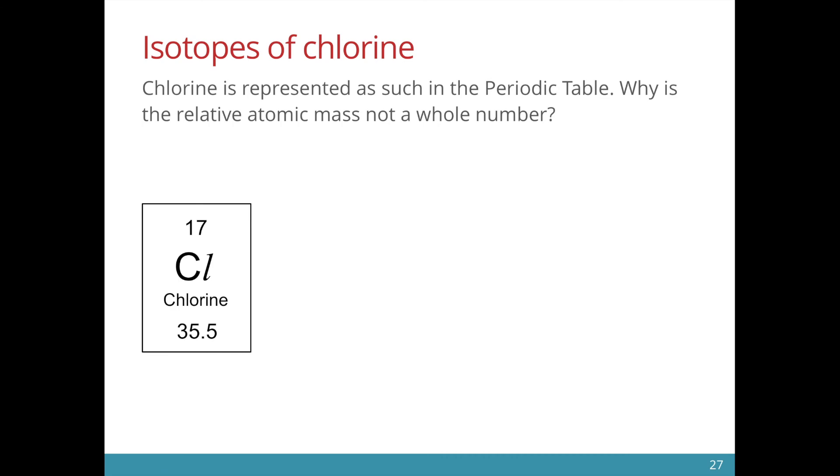If you were to observe the periodic table closely, you would notice that certain elements, especially chlorine, would have a relative atomic mass that is not a whole number. So why is that so?